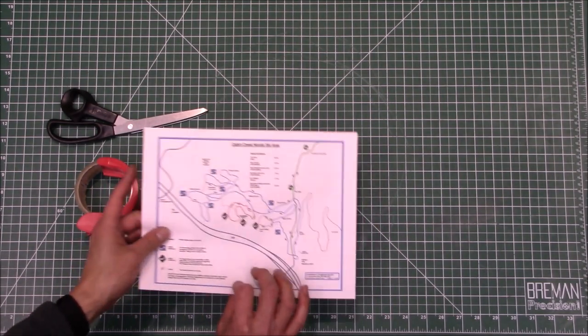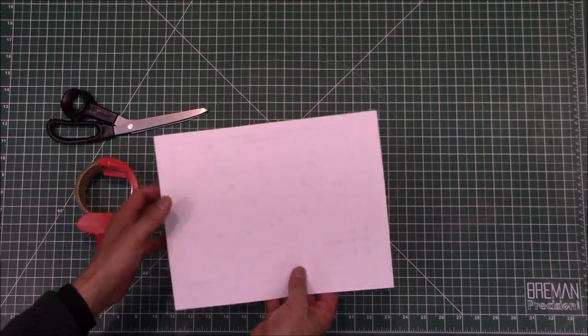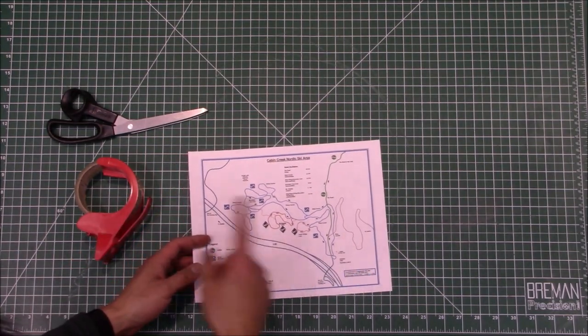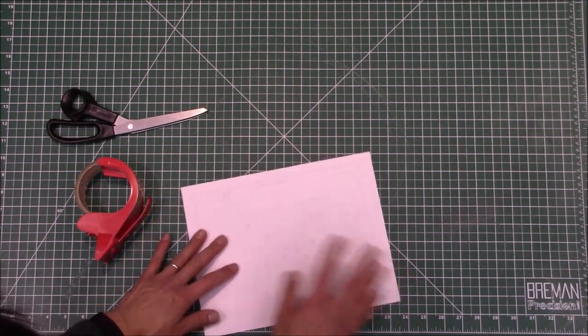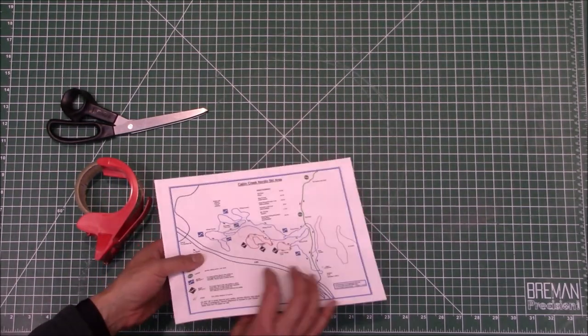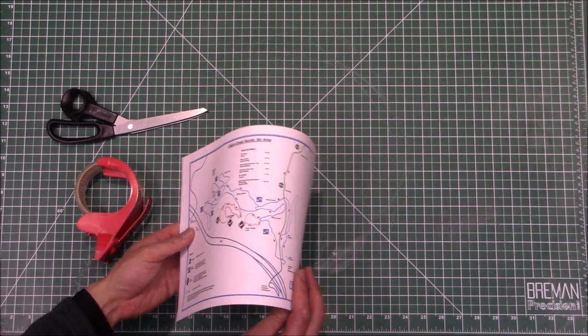Now that actually brings up a good point. For example, this document here, it's only one-sided. I've got nothing on the back, so it is a little bit of a waste to laminate this whole front and then this whole empty back. So one quick trick to save yourself some time as well as some packing tape is to take your document and just fold it in half.